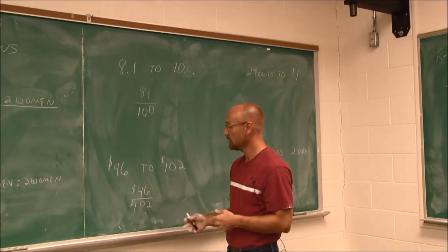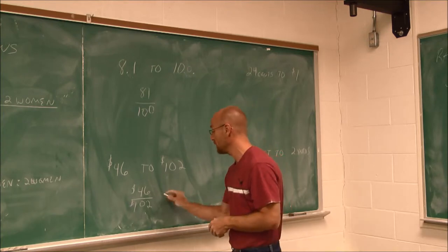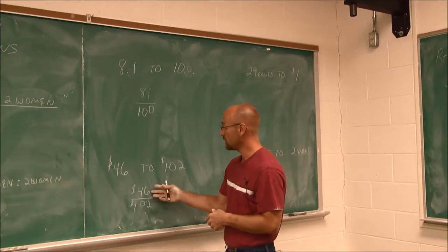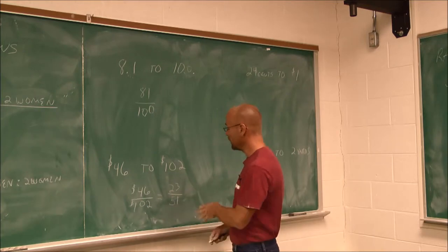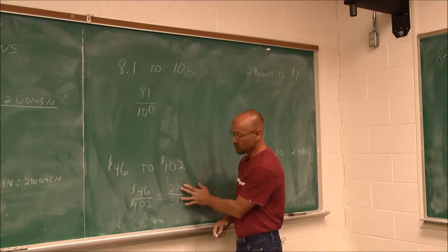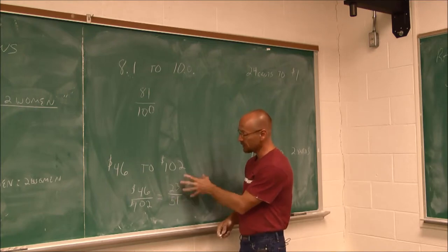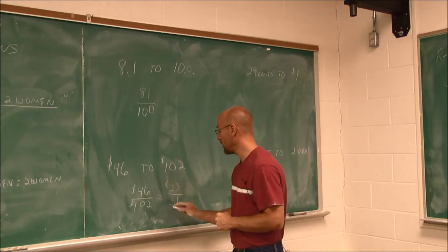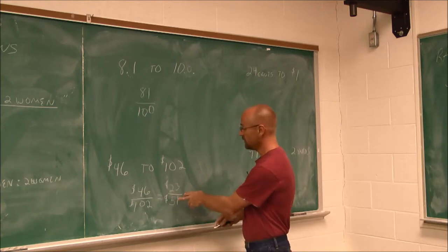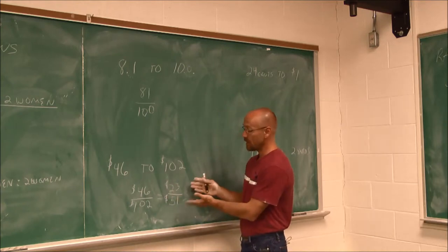Well, I look at 42 and 102, and I recognize they could both be divisible by 2. So I divide this by 2 to get 23. And I divide this by 2 to get 51. Neither of these have a common factor. 23 is prime. 51 is 17 times 3. But since this is prime, there are no common factors. So it would be $23 to $51. So that would be our ratio.